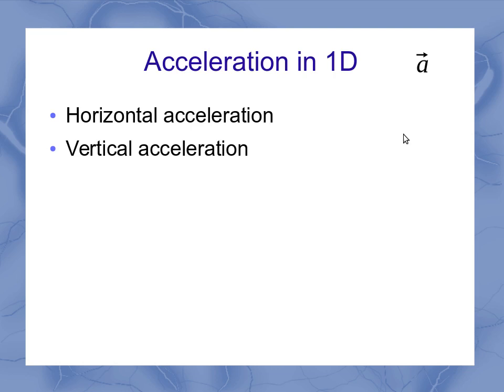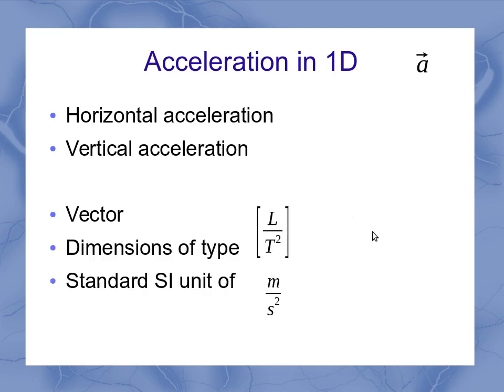But we just used the A vector symbol. It was a vector because it mattered which direction it was accelerating in, the positive direction or the negative direction. The dimensions were of type length per time squared, and the standard metric unit was meters per second squared.